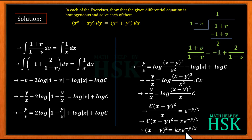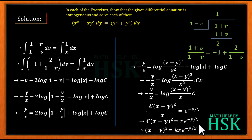Note that the answer c(x − y)² = x·e^(−y/x) is equally correct. I have written it in this form for your convenience to match the textbook answer, but both forms are valid. So this is how we solve this question, and this is the required answer.